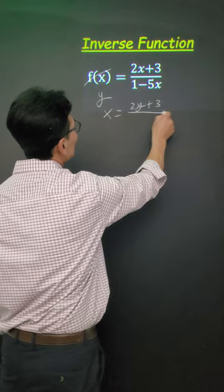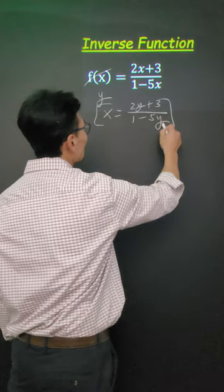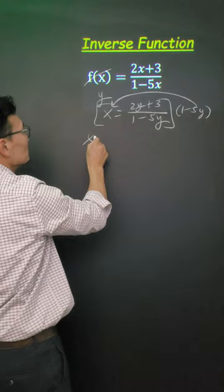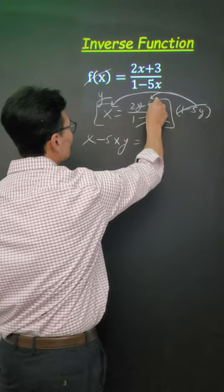Next, we want to solve for y. To do that, we're going to multiply the entire equation by 1 minus 5y. This gets cancelled out when you multiply this here.